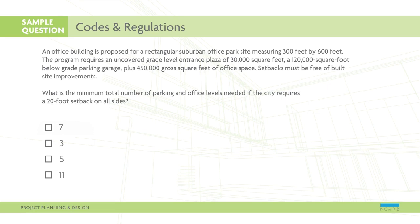An office building is proposed for a rectangular suburban office park site measuring 300 feet by 600 feet. The program requires an uncovered grade-level entrance plaza of 30,000 square feet, a 120,000 square foot below-grade parking garage, plus 450,000 gross square feet of office space. Setbacks must be free of built site improvements. What is the minimum total number of parking and office levels needed if the city requires a 20-foot setback on all sides?